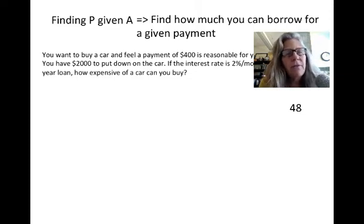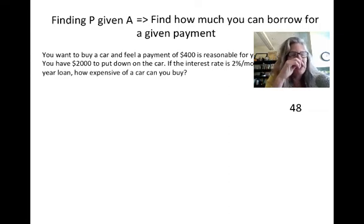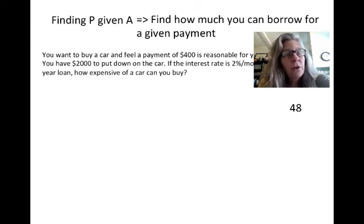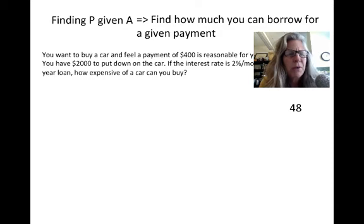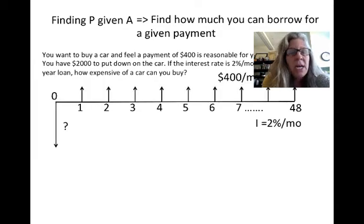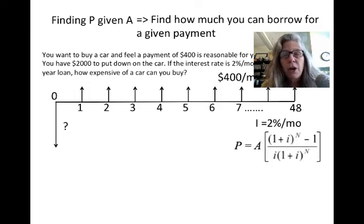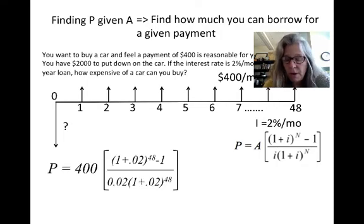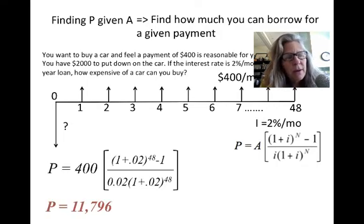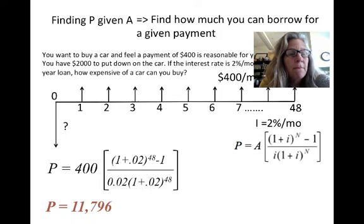Next, let's find how much you can borrow for a given payment. Say you want to buy a car and can afford a $400 monthly payment, with $2,000 to put down. At an interest rate of 2% a month for a four-year (48-month) loan, the present value of the payments is almost $12,000. Adding the $2,000 down means you could buy a car for about $14,000.